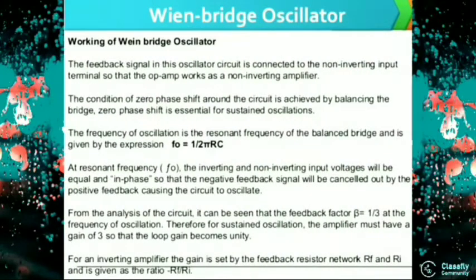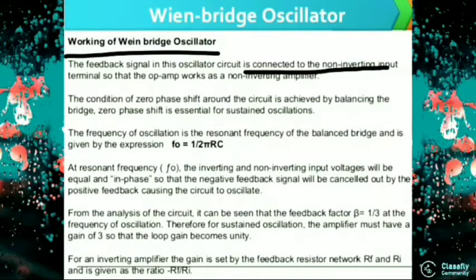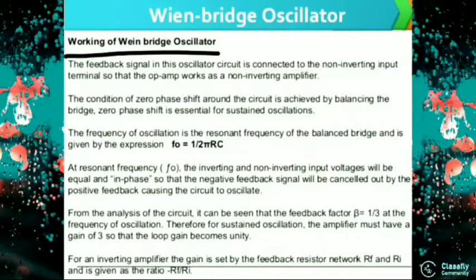Regarding the working of the Wein Bridge Oscillator: the feedback signal in this oscillator circuit is connected to the non-inverting input terminal, so that the op-amp works as a non-inverting amplifier.